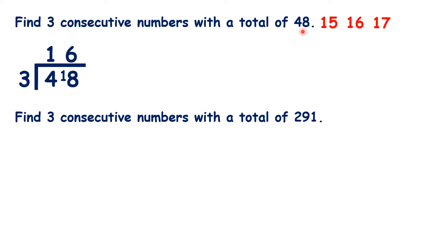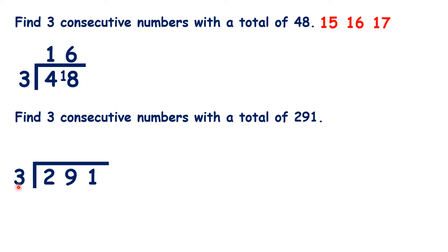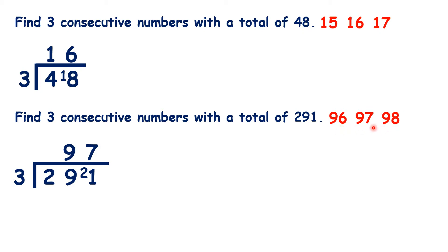Pause the video and see if you can use the same method to find three consecutive numbers with a total of 291. We start by dividing 291 by 3, which gives us 97. So that's our middle number. Our three consecutive numbers must be 96, 97 and 98. If we add these three numbers together, we'll get 291.